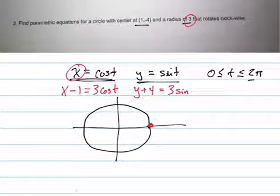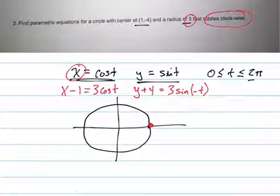And then the final thing is we want it to go clockwise, not counterclockwise. So we need to make the t negative.